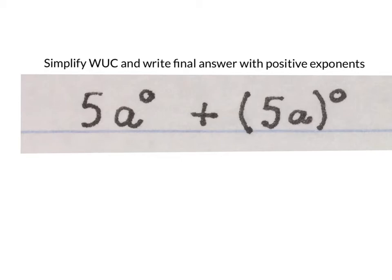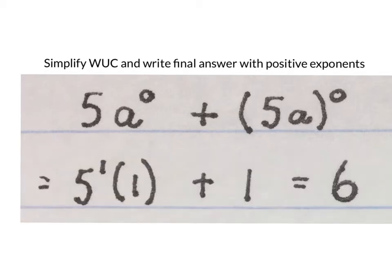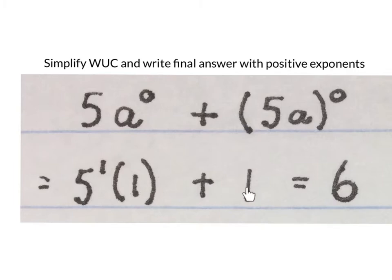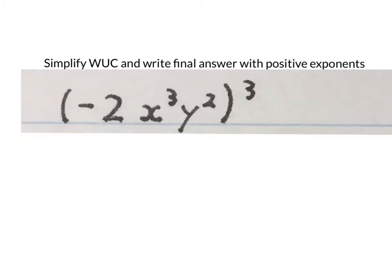It is our first expression. The 5 has an exponent of 1. A to the power of 0 is 1, and that whole bracket to the power of 0 is 1. 5 times 1 is 5, plus 1 is 6. Next question.